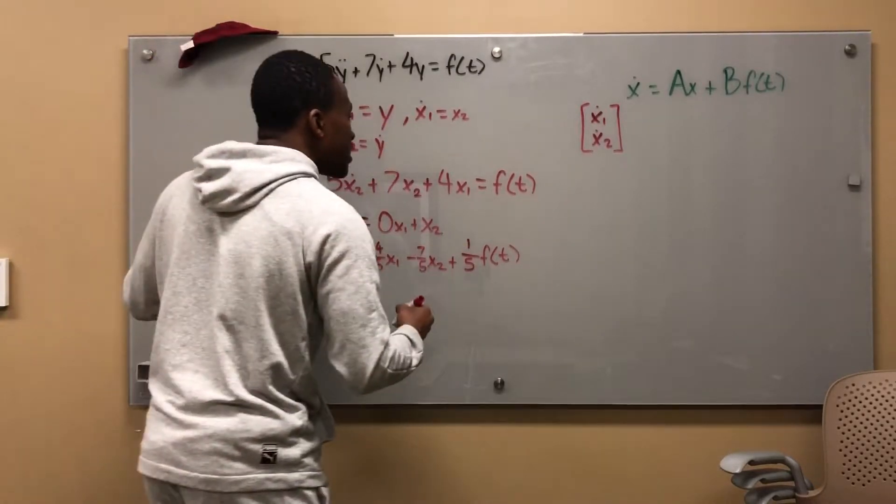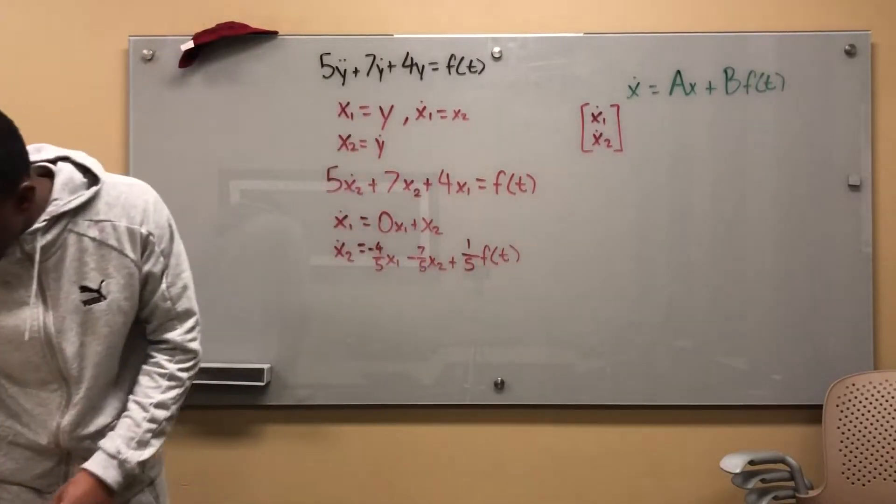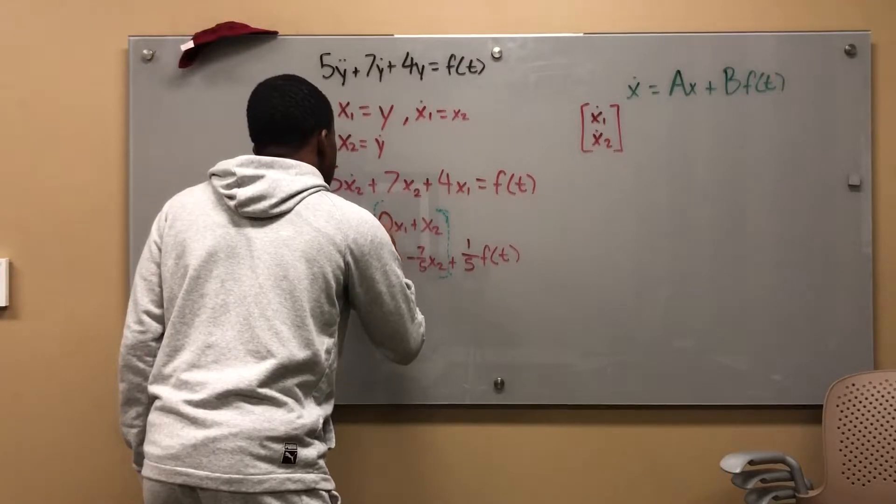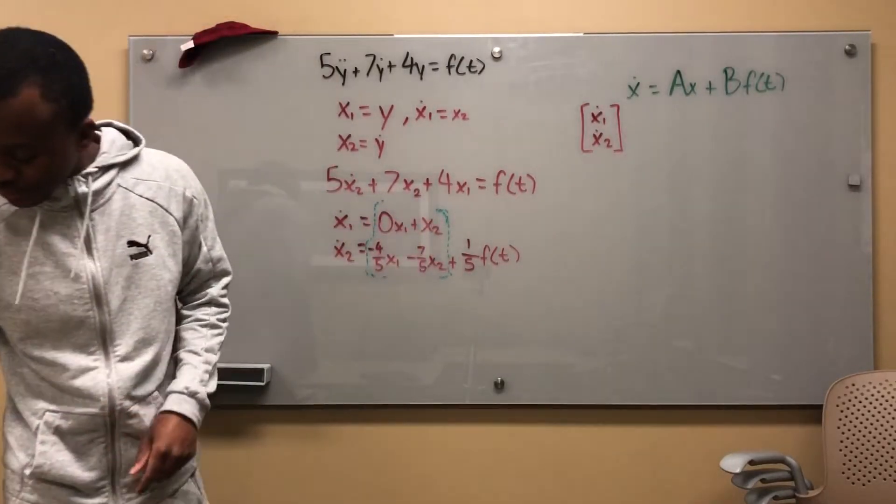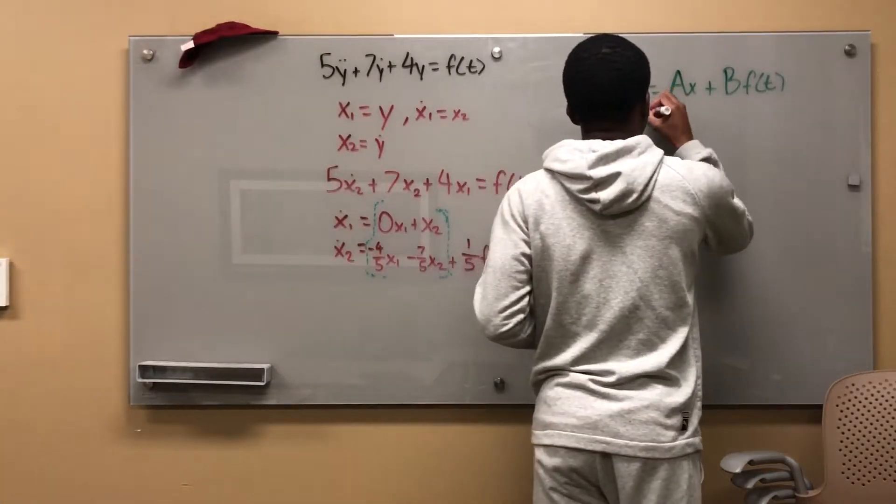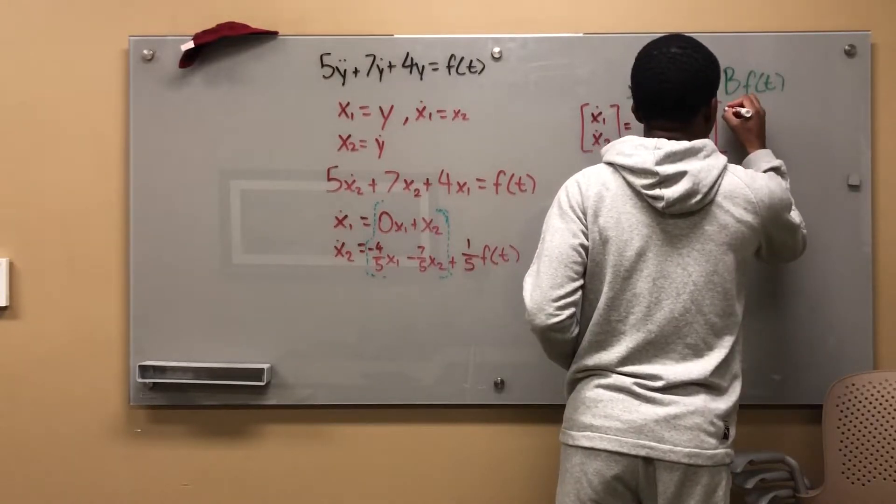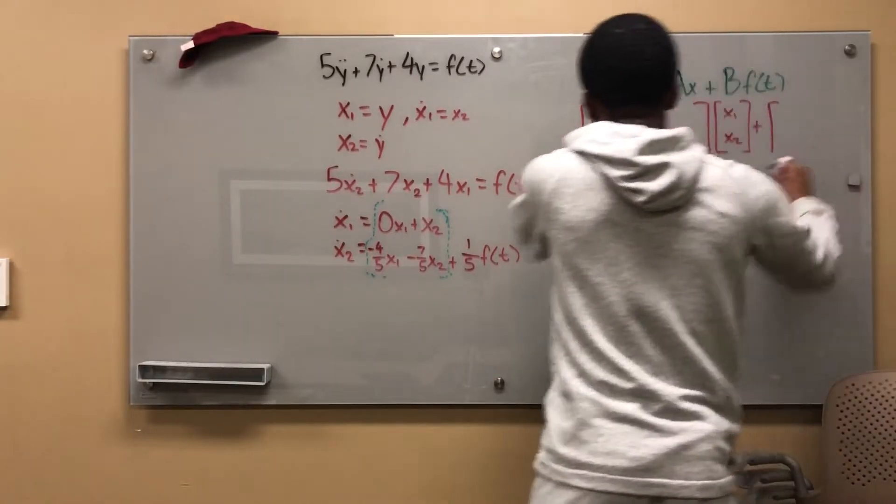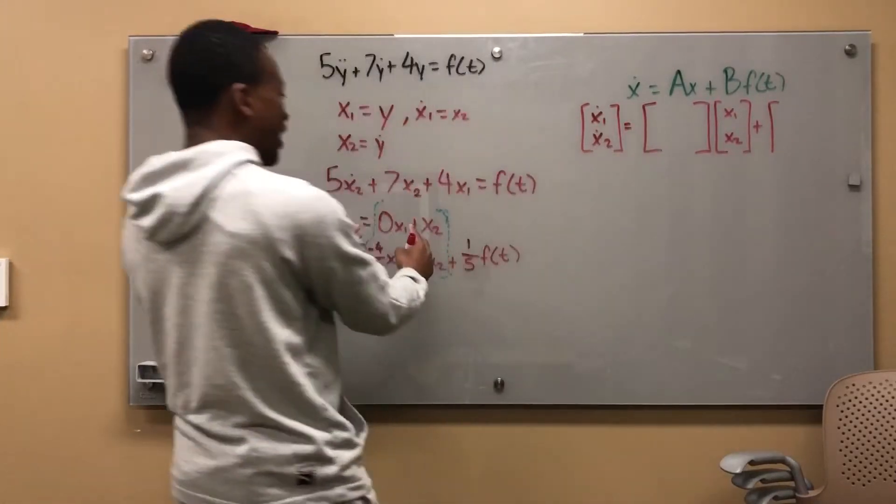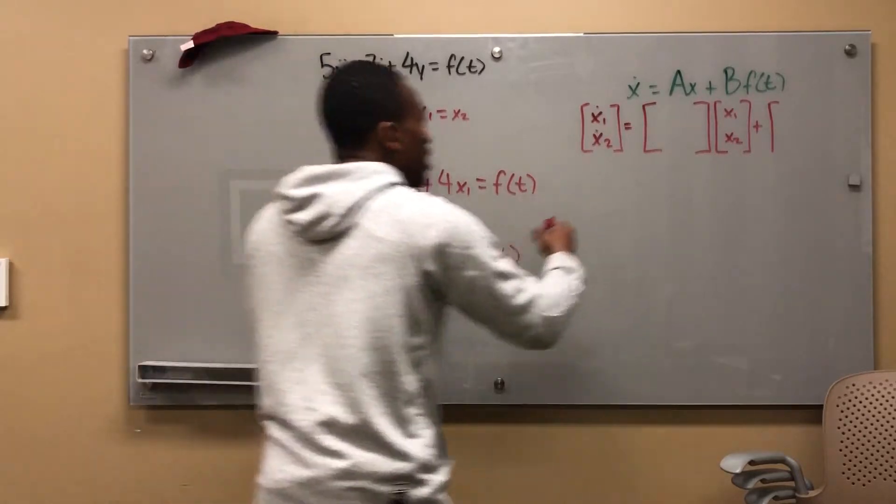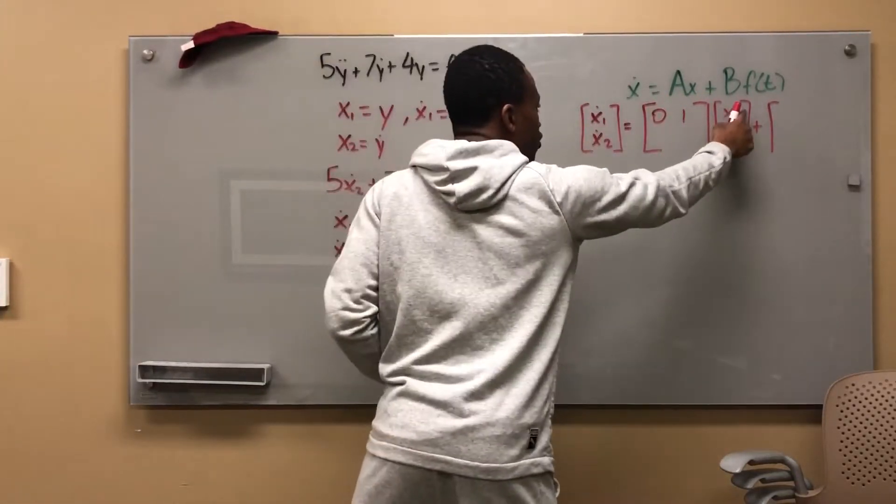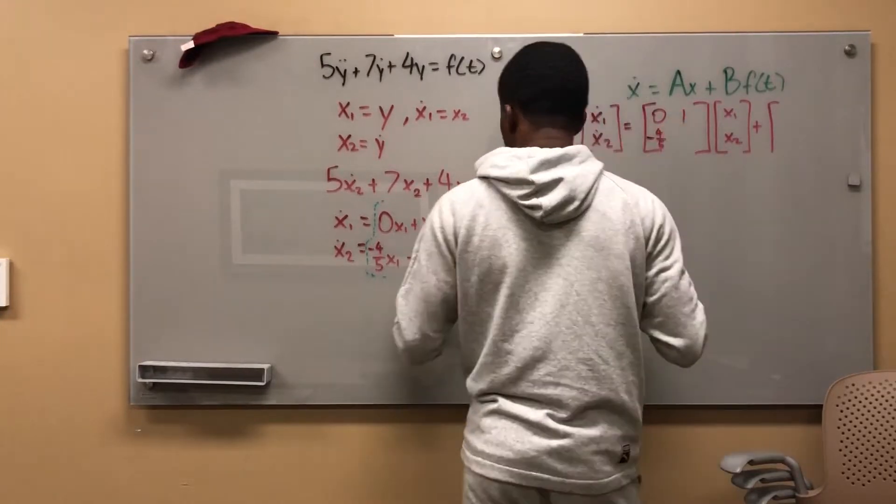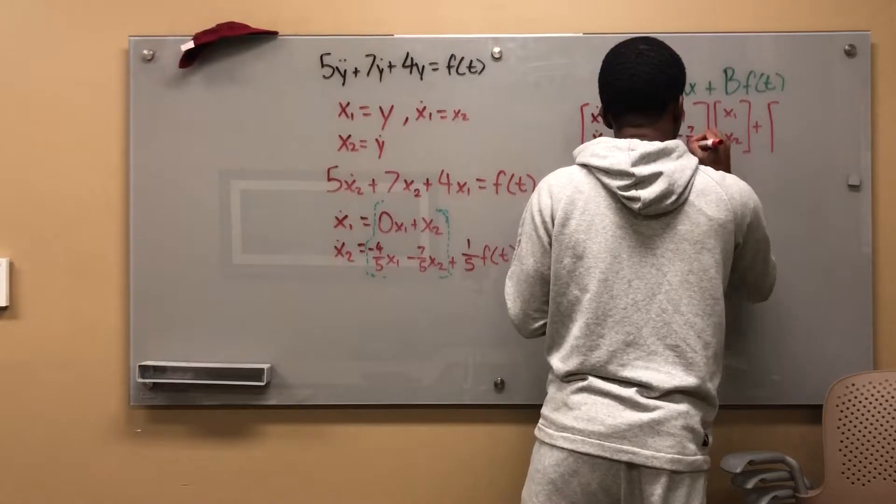The reason I'm doing it like this is because I can look at this as a 2 by 2 matrix. I know that this is equal to something times an x column vector, plus something. Looking at this, I can just put this in there. So it's going to be 0 and then 1 because I have 0x_1, 1x_2. x_1, x_2. This second line is going to be -4/5, -7/5.